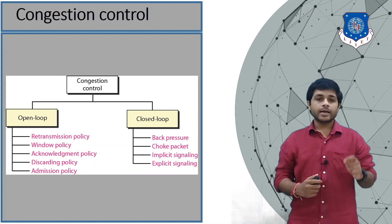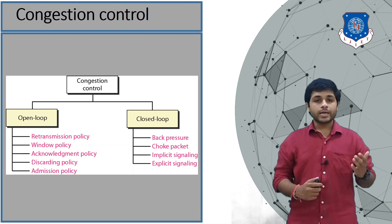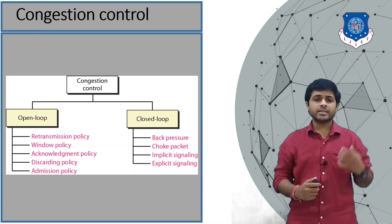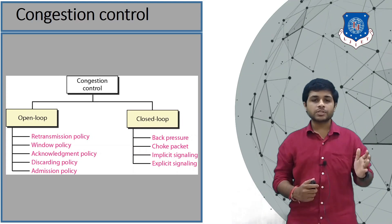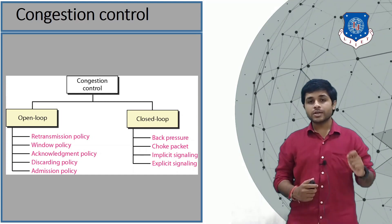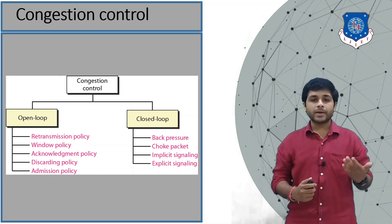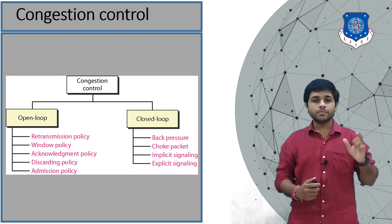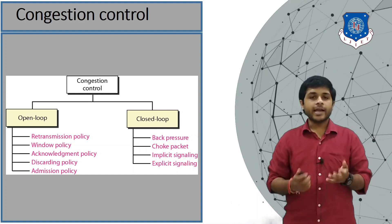The second type is the window policy. The window policy states that the sender's window should be selected according to the capacity of the link. A sender can have different window sizes — sending 4, 8, or 16 packets at a time — but it must also consider the capacity of the link. If the link cannot carry more than 5 packets at a time, the remaining packets will be dropped. So window policy tells us the sender should send packets according to the capacity of the link or receiver.